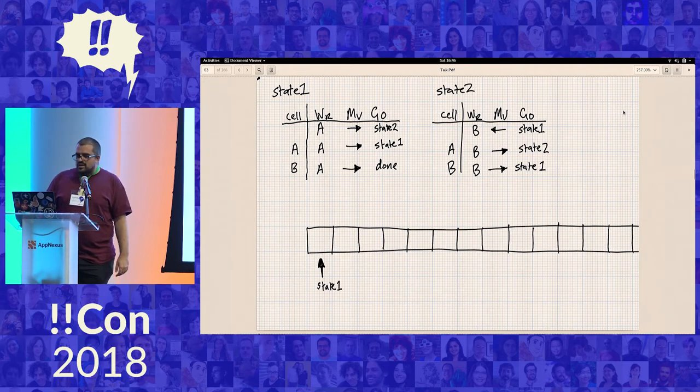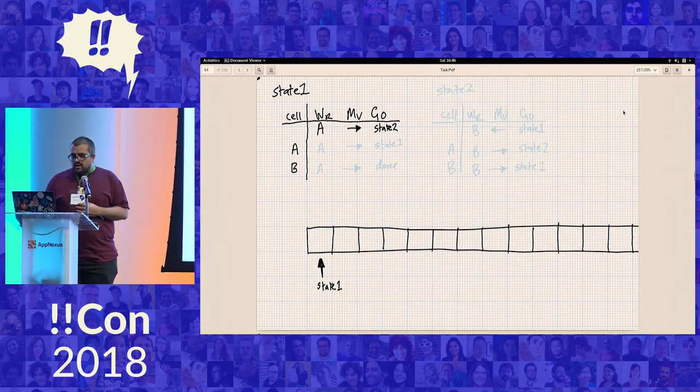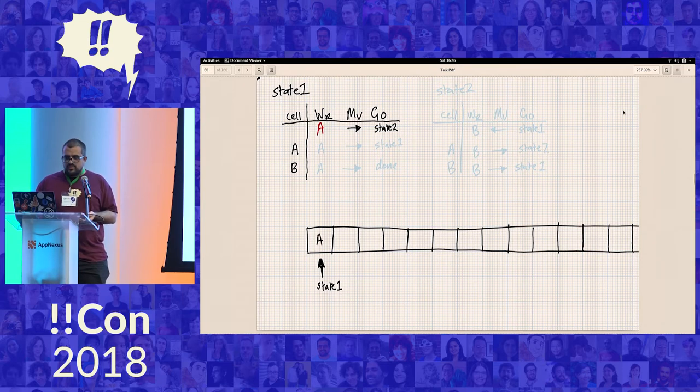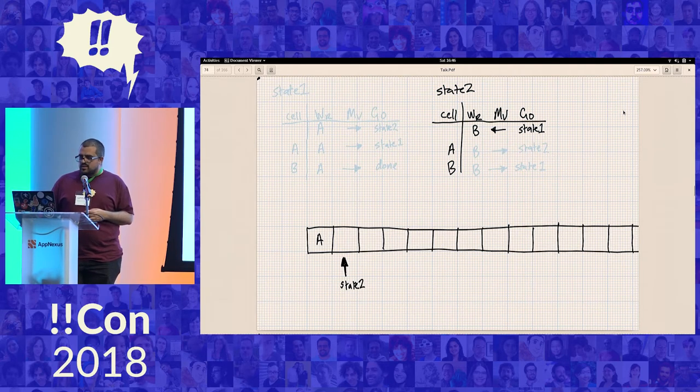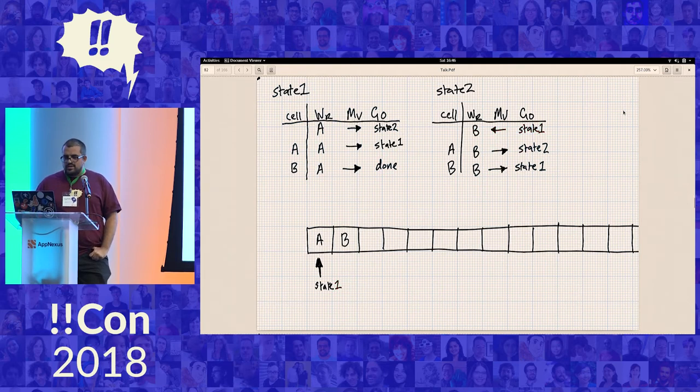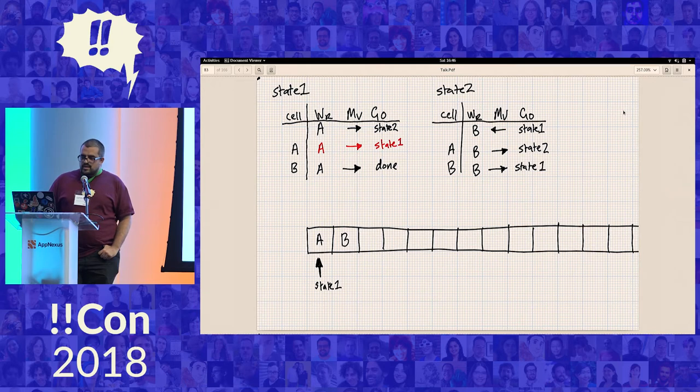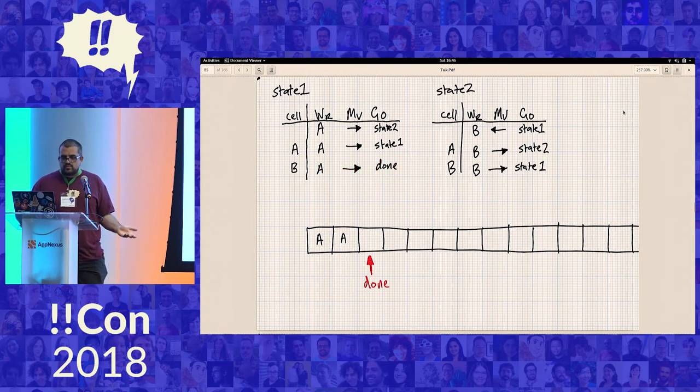So here's a very quick run-through of how this might look. So we're in state one and we're over a blank. So we have to fill in an A, move to the right, change to state two. And then now we're over a blank and we're in state two. So we have to do what it says over there, which is fill in a B, move left, change to state one. And I'm going to run through this quite a bit faster. So now we have to move right and change to state one. And then we are over a B and we're in state one. And so we're done. So that was an example of a Turing machine that stopped.